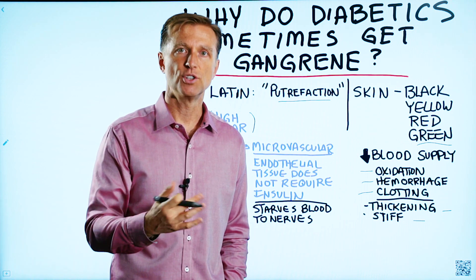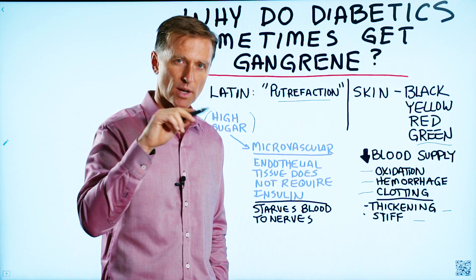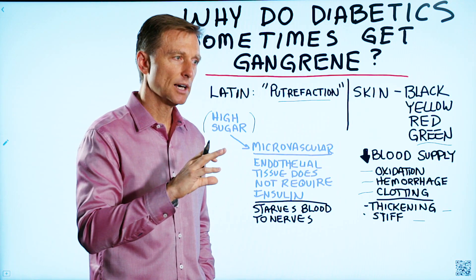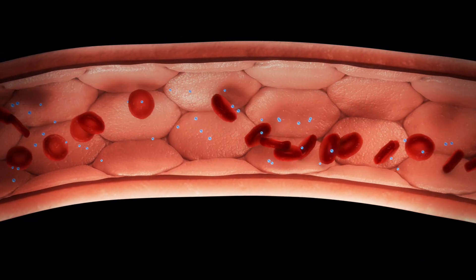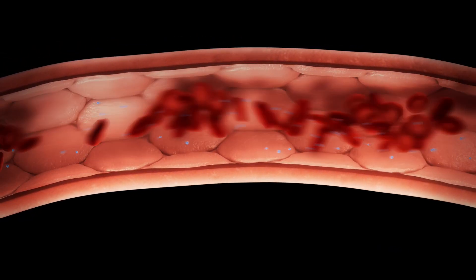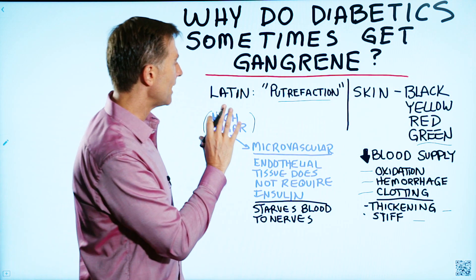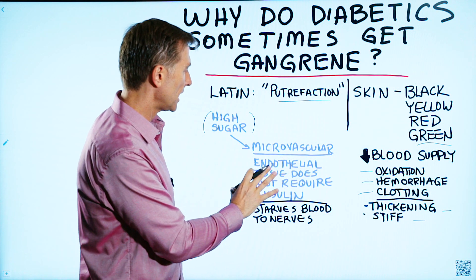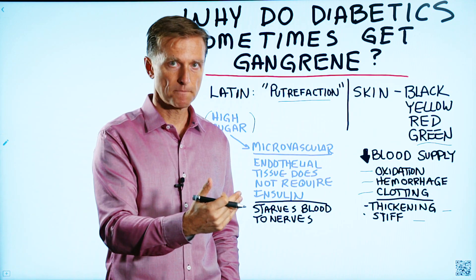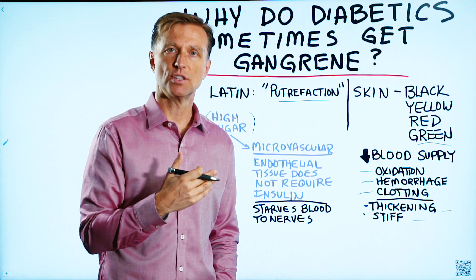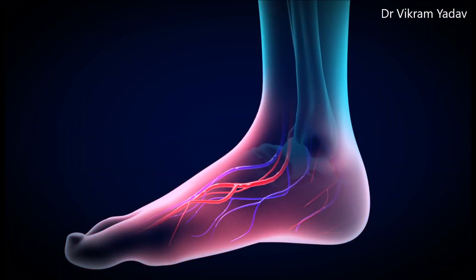The red blood cells don't require insulin either. This is why when you get a test called A1C, they're measuring the amount of exposure of that sugar to the red blood cell to determine if you're diabetic or not. So the more sugar in the blood, the more vascular problems you're going to have, and that's going to stop the nutrition and oxygen to the tissues, and it starts dying — that's what's called gangrene.